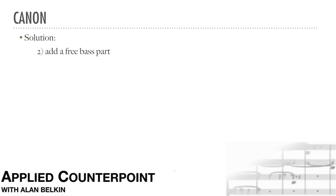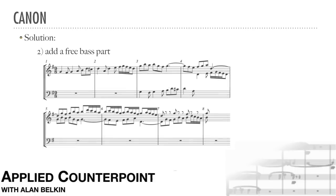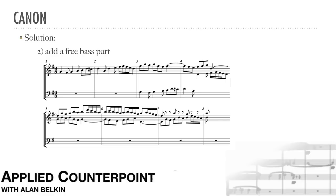Another way to deal with the problem of static harmony is to add a free bass line. Bach does this very often. Here's an example from the Goldberg Variations, Variation 24, Canon at the Octave. First, here's the beginning of the canon, but without the added bass. This is nice, but a bit lacking in harmonic variety, and quite bare in measure seven.